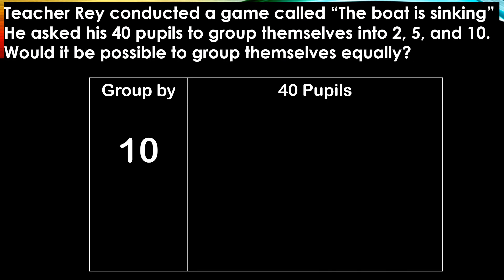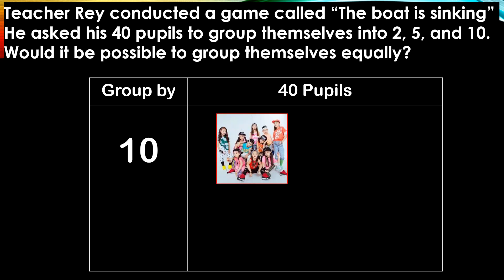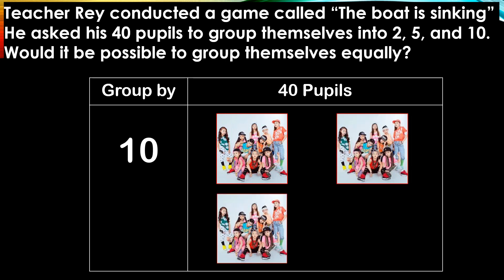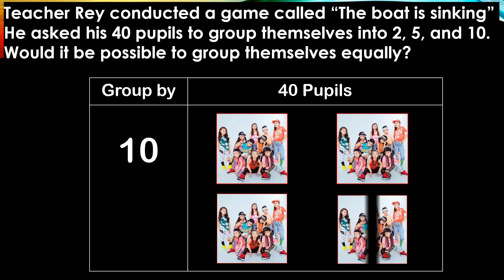Now, let us group them into 10. That is the first group composed of 10 members. Another second group composed of 10 members. The third group and the fourth group. So, we have 4 groups of 10. Meaning, 40 is divisible by 10.